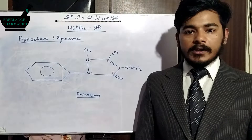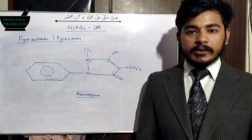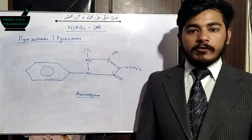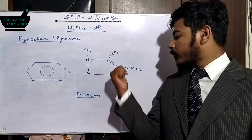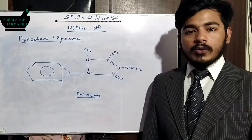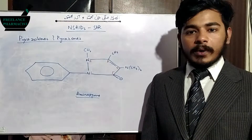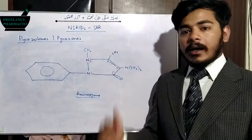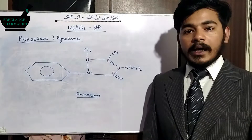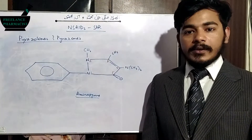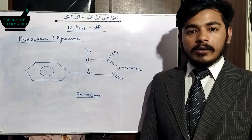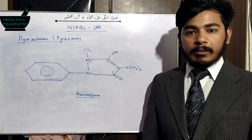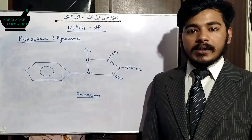The next drug is aminopyrine, which is very similar to phenazone. The only difference between aminopyrine and phenazone is on the fourth position. In phenazone, the fourth position was occupied by hydrogen. But in aminopyrine, the hydrogen is replaced by a dimethylamino group, which will increase the drug's potency, make it more lipophilic, and increase the drug's stability.